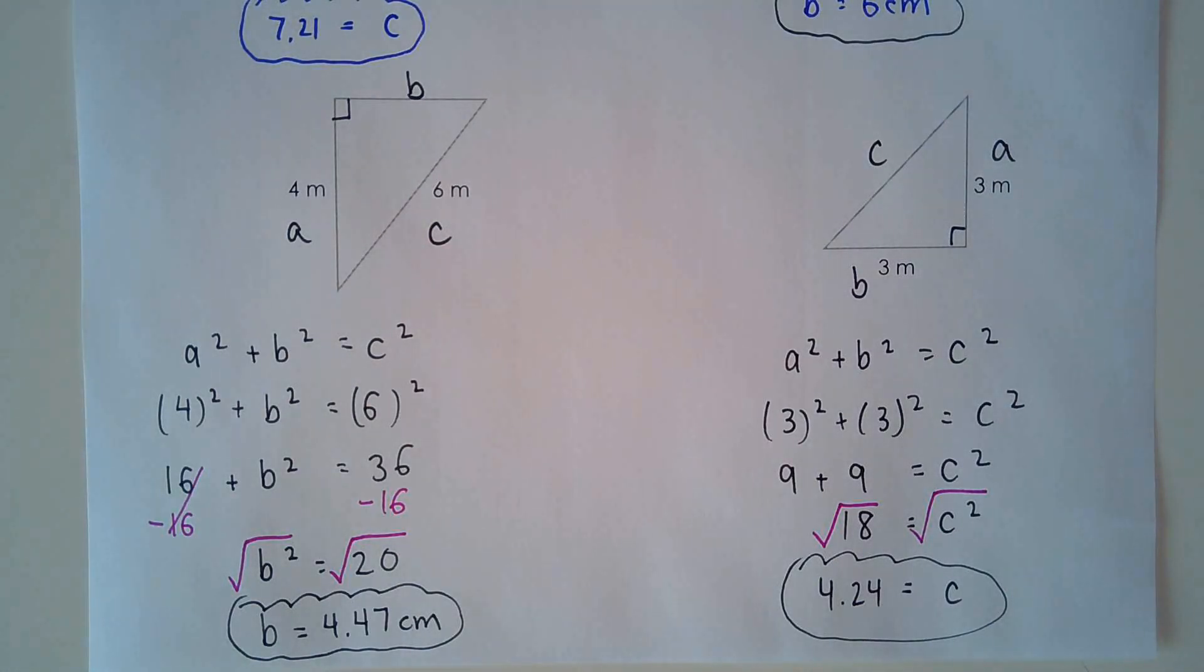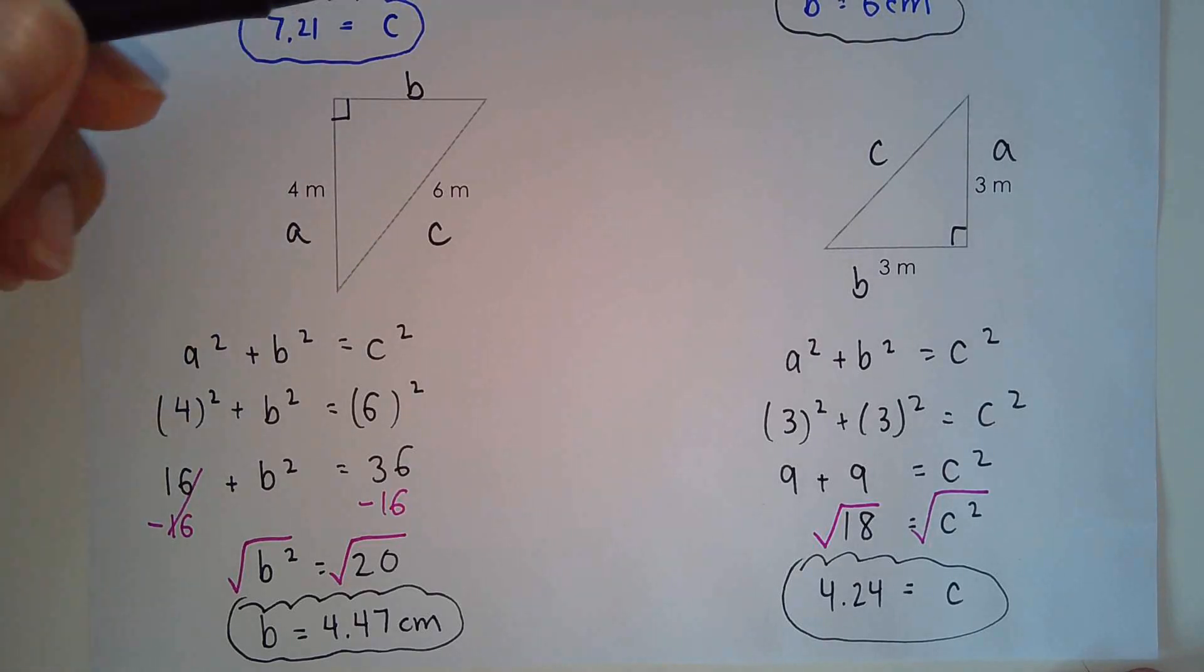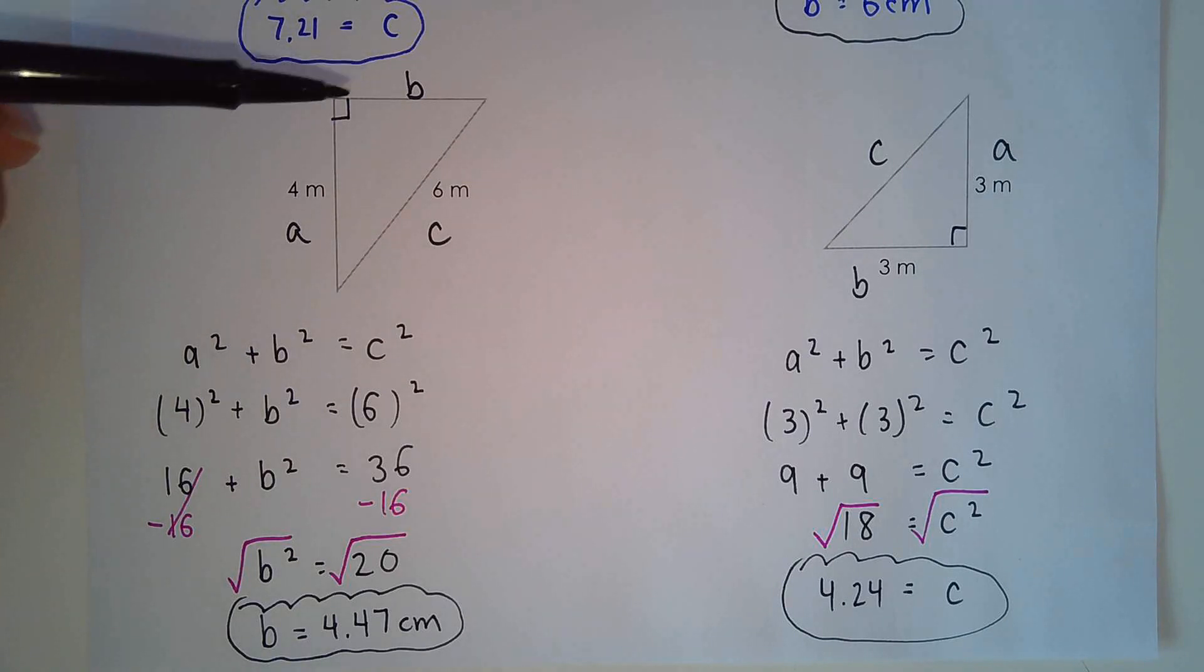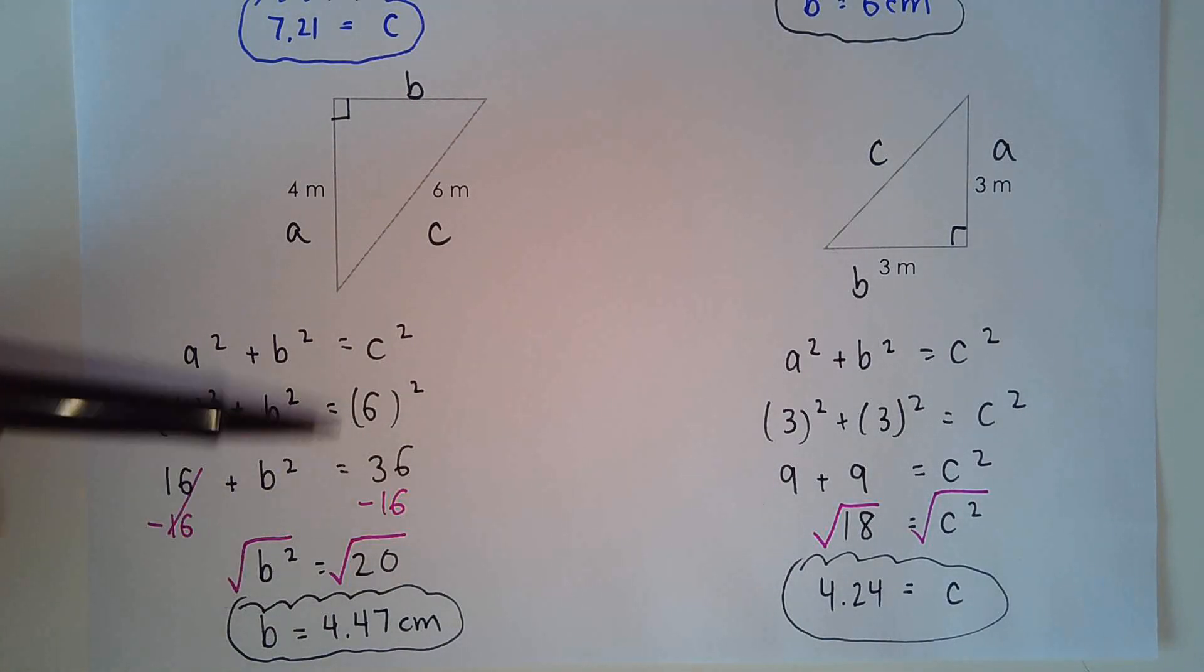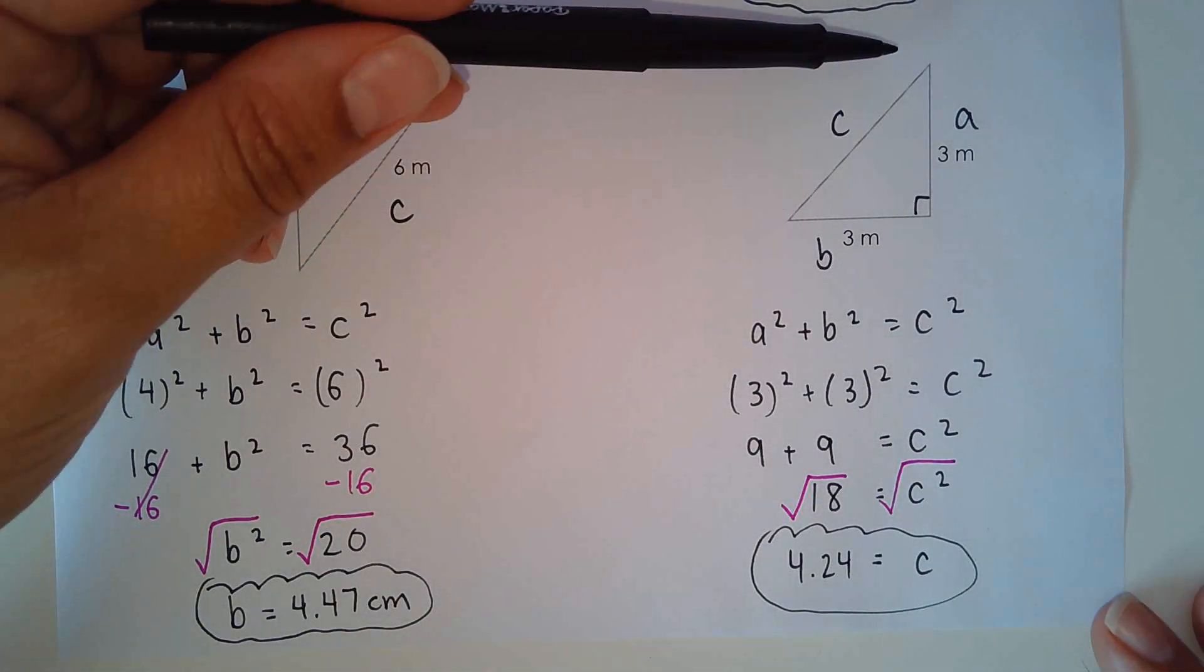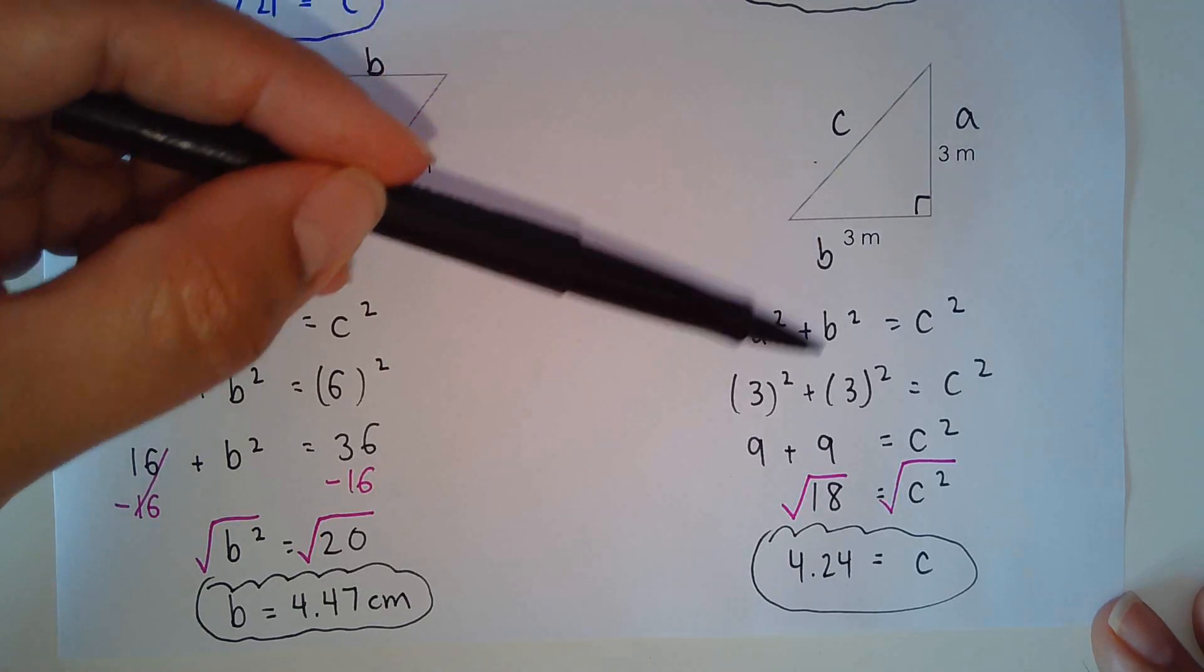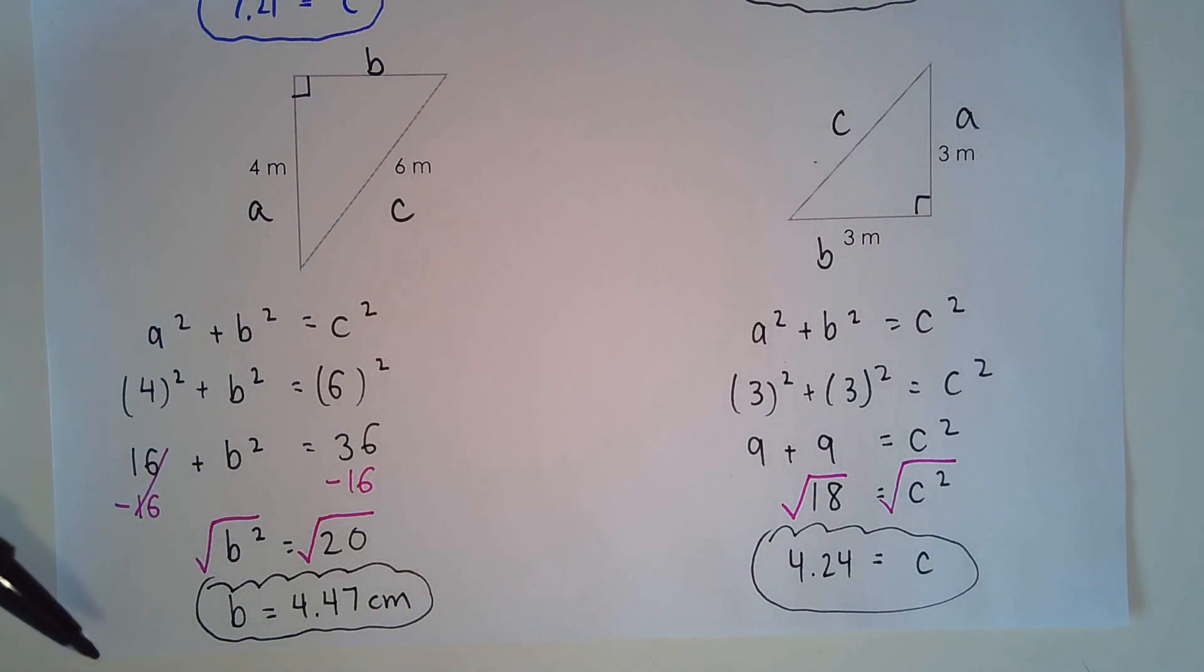Okay. And then for the last two examples, the triangle on the left here, we're solving for side B. So make sure, when you're doing this question, you have to subtract side A and you should end up with an answer of 4.47. And then for the last triangle here, A squared plus B squared equals C squared. So we're solving for the hypotenuse in this case, three squared plus three squared. So nine plus nine. And we take the square root of 18. So this is the Pythagorean theorem.